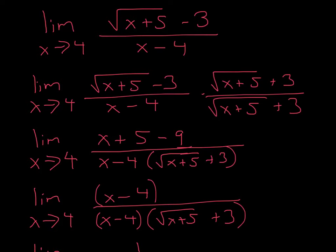Why we do this is if you actually distribute all of this out, the square roots end up canceling, and that's why we do it. Because all the square roots cancel, and we're left with x plus 5 minus 9. And then since we multiply the bottom too, we just put that on the denominator here.